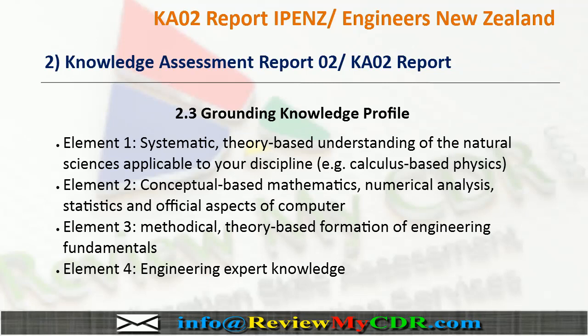There are eight elements which make up the report. The first element is systematic, theory-based understanding of the natural sciences. The second element is conceptually based mathematics, numerical analysis, statistics, and formal aspects of computer. The third element is systematic, theory-based formulation of engineering fundamentals.